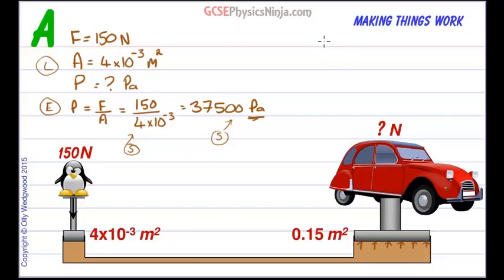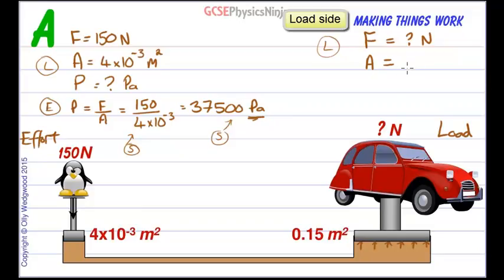So we're going to do another data list over here. So here's our data list. So the force is what we're trying to find. That's the newtons, that's the weight of this car that we need to lift. So question mark in newtons. The area of the piston on the load side, so that's the load side, this is the effort side, is 0.15 meters squared. And the pressure, what's the pressure? Well, the pressure is the same that is created by the penguin's weight acting on this area of the piston over here. And that was 37,500 pascals.